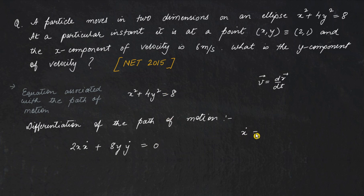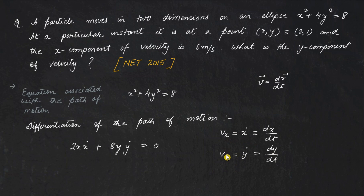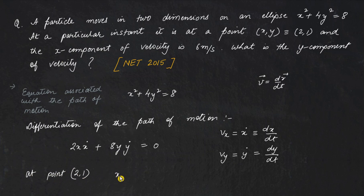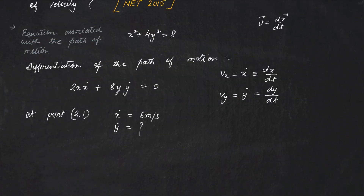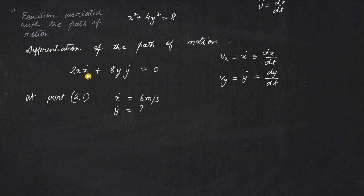Here ẋ signifies dx/dt and ẏ signifies dy/dt. dx/dt is the velocity component in the x-axis and ẏ is the velocity component in the y-axis. This equation contains x, y, vx, and vy. We are also given that at point (2, 1) the x-component of velocity is 6 m/s, and we need to find the y-component of velocity.